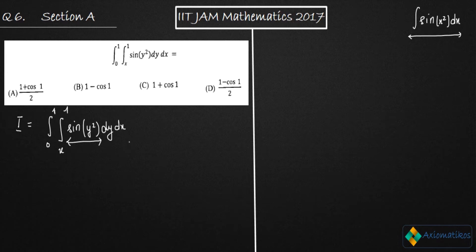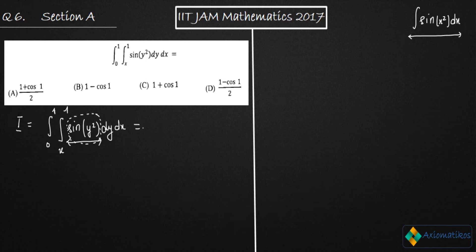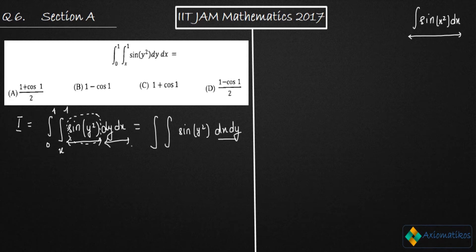We name this type of problem 'change of order of integration.' Since we are not able to integrate sine of y squared, we have to change the order of integration. The meaning is very simple: instead of integrating y first, you have to integrate x first. Since you don't know the integration of sine y squared, you have to change its order.